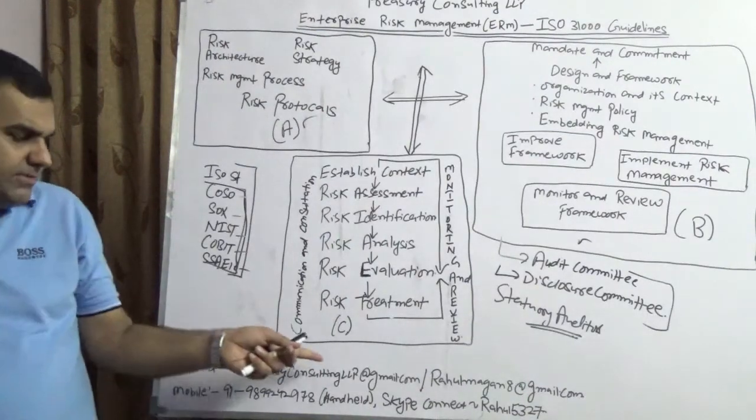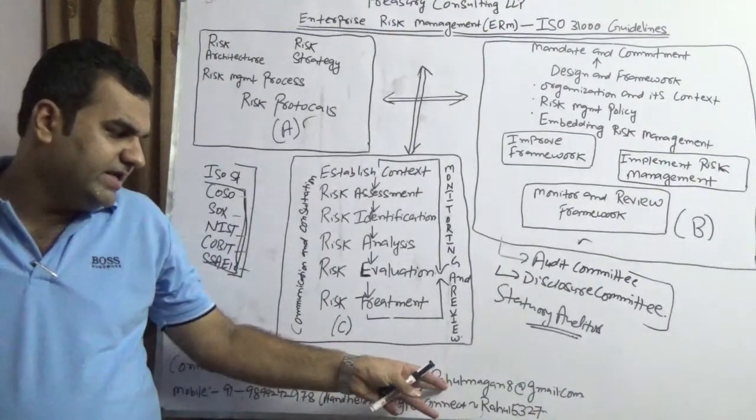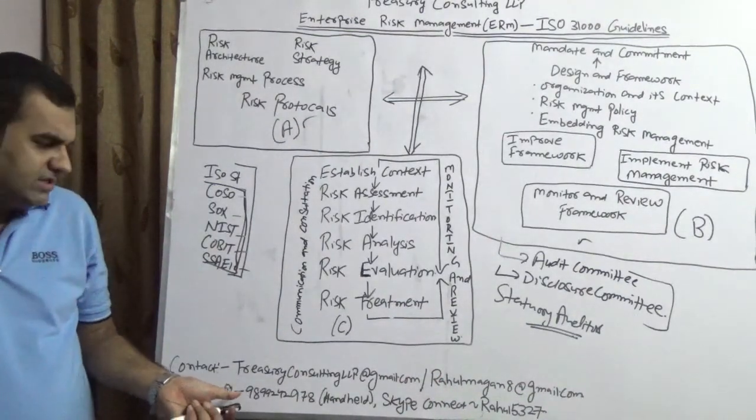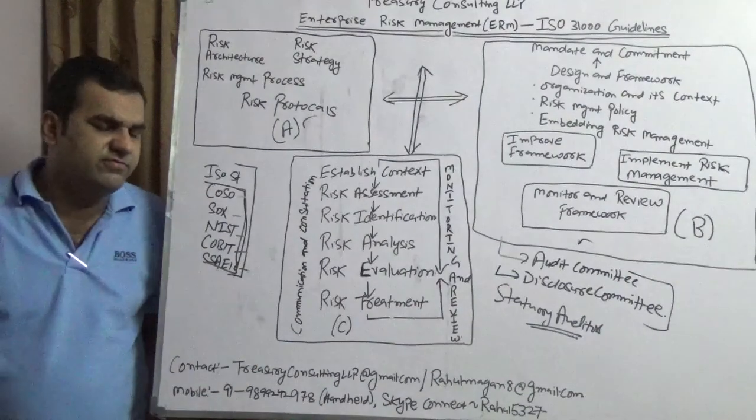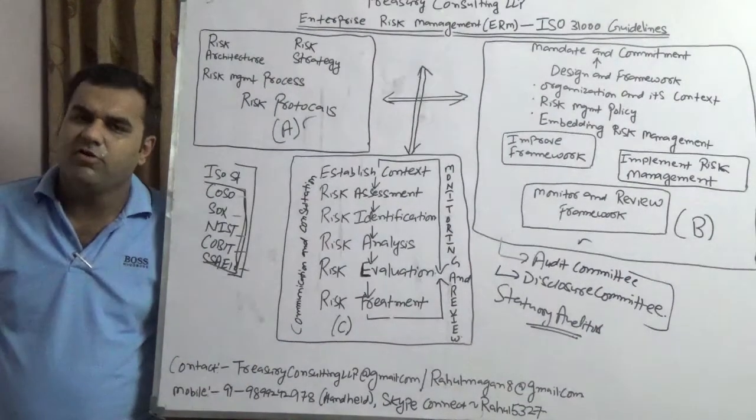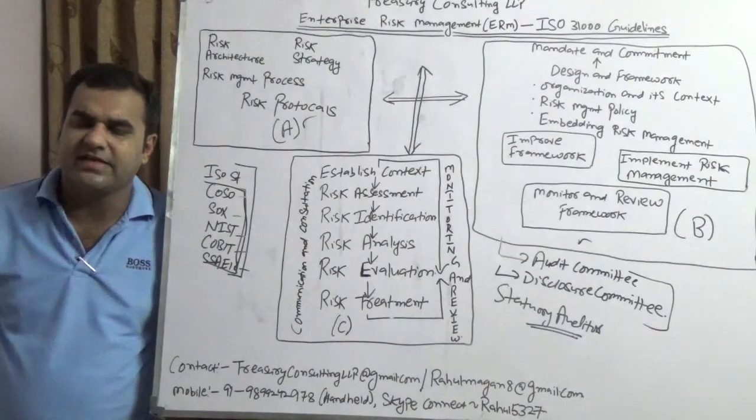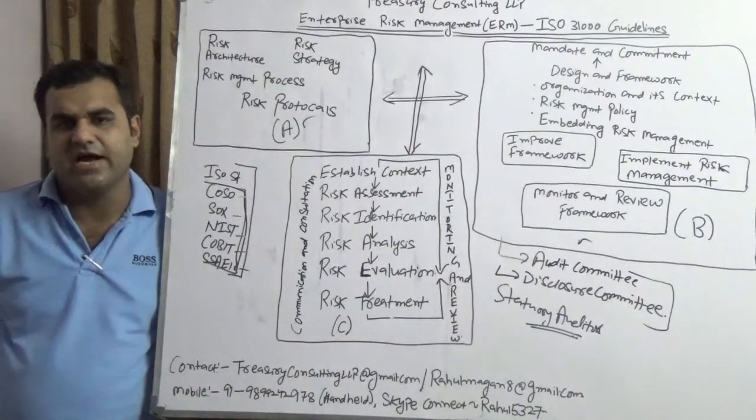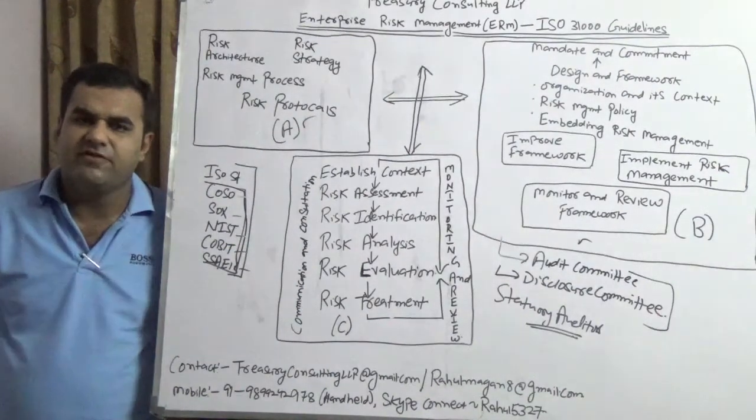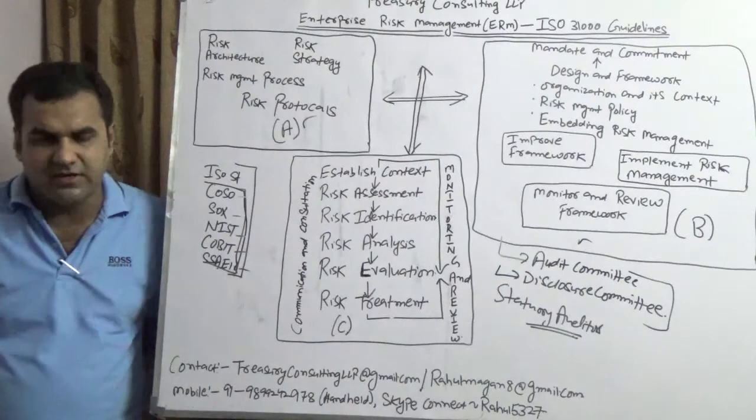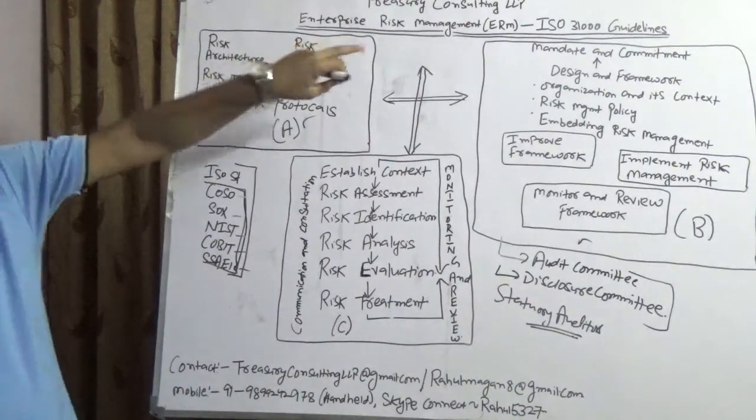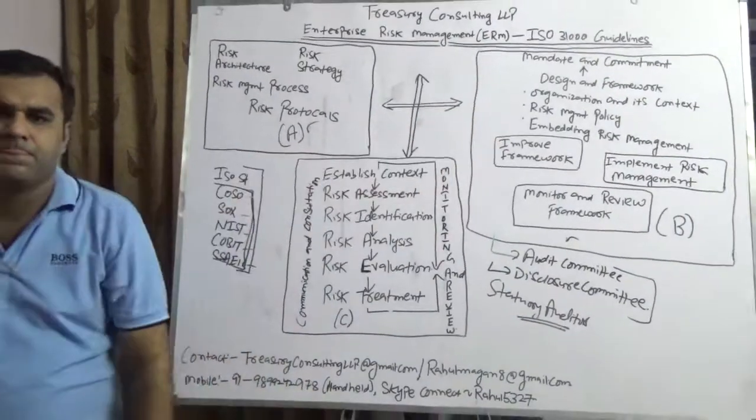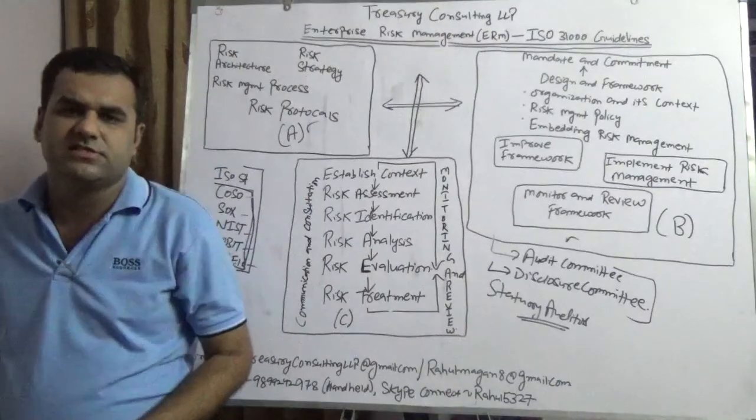Our email is at gmail.com, or alternate email ID is rahulmagan8 at gmail.com. Our mobile number is 9899242978 and our Skype connect is rahul5327. Before winding up this video, we would like to stress the fact that these ISO standards are getting very relevant considering the fact that the market is getting highly volatile. At the same time, we would like to stress two important factors: one is the architecture process and one is the organizational tools. These tools are very relevant when it comes to risk management. Thank you, and this is Treasury Consulting.